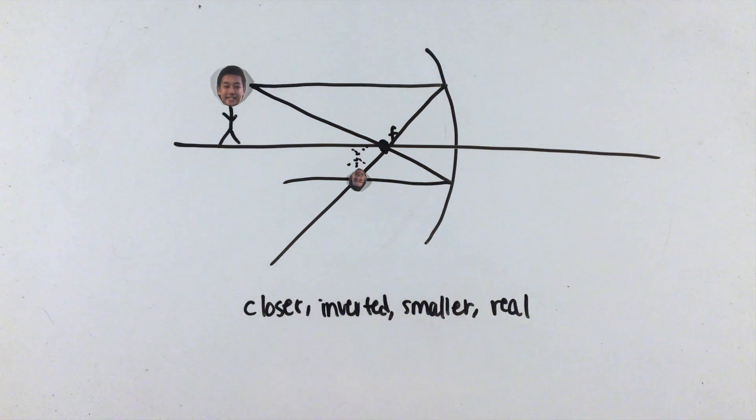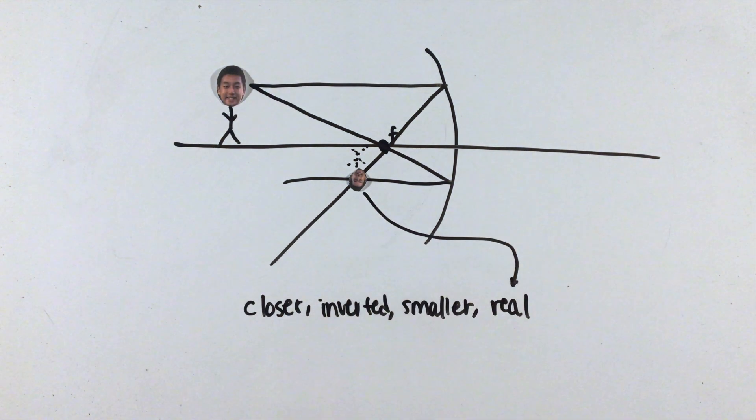Here, the resulting image is closer to the mirror, inverted, smaller, and real, which means that the rays of light converge to a single point.